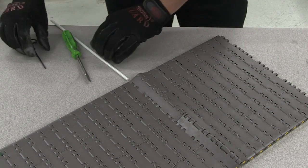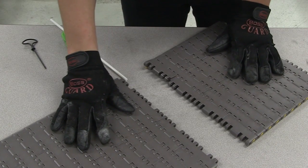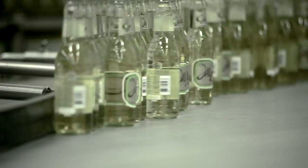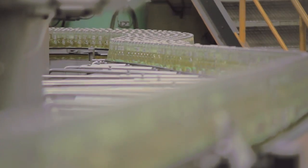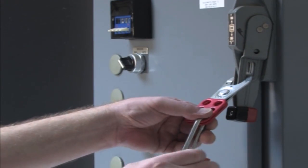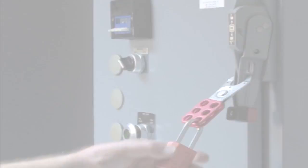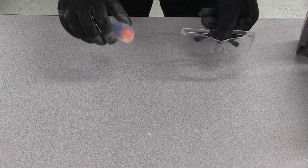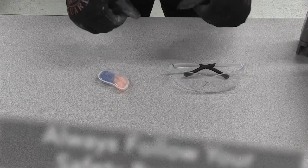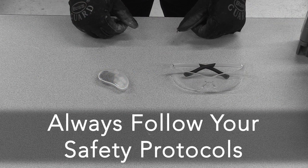In order to accomplish this properly and safely, there are certain precautions to observe before beginning. If you are working on a chain that is currently installed in your application, always follow your lockout tagout procedures before approaching the chain. Wear proper eye, ear, and hand protection, and always follow your company and plant's safety protocols.